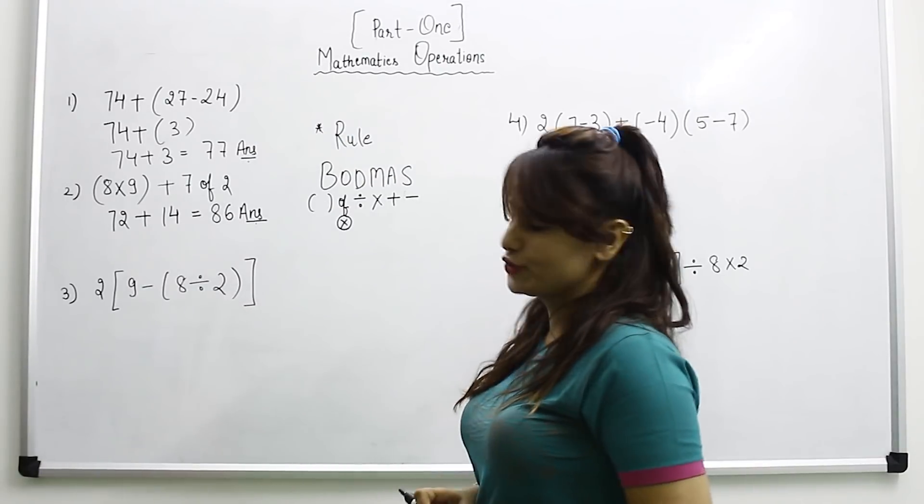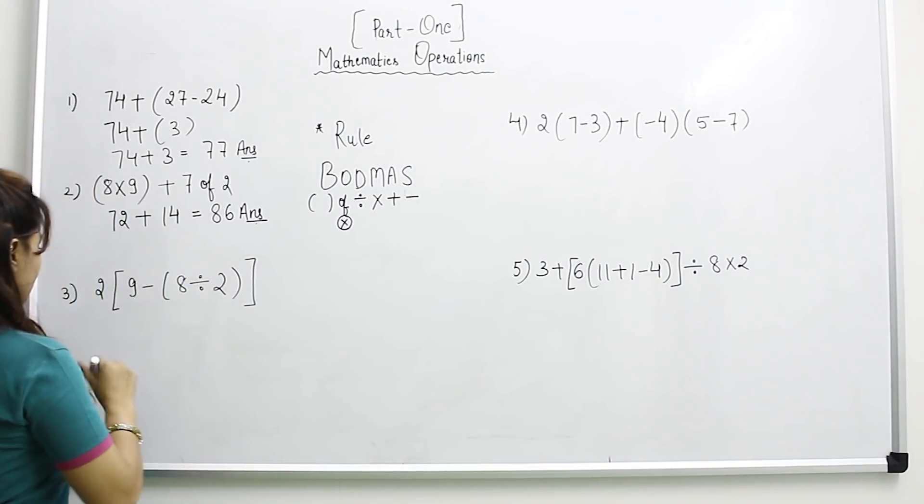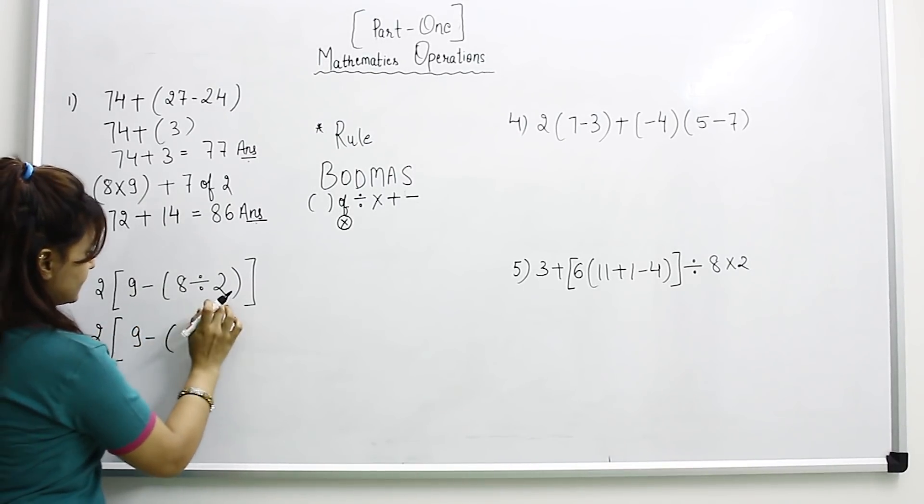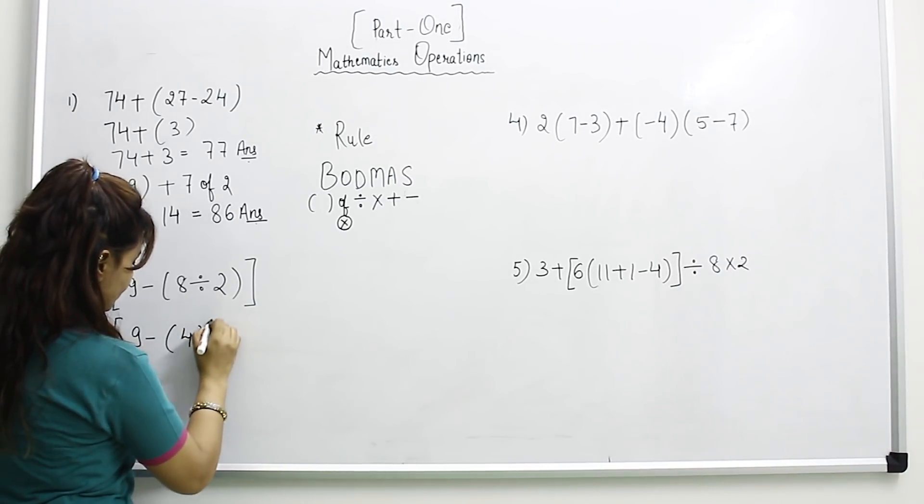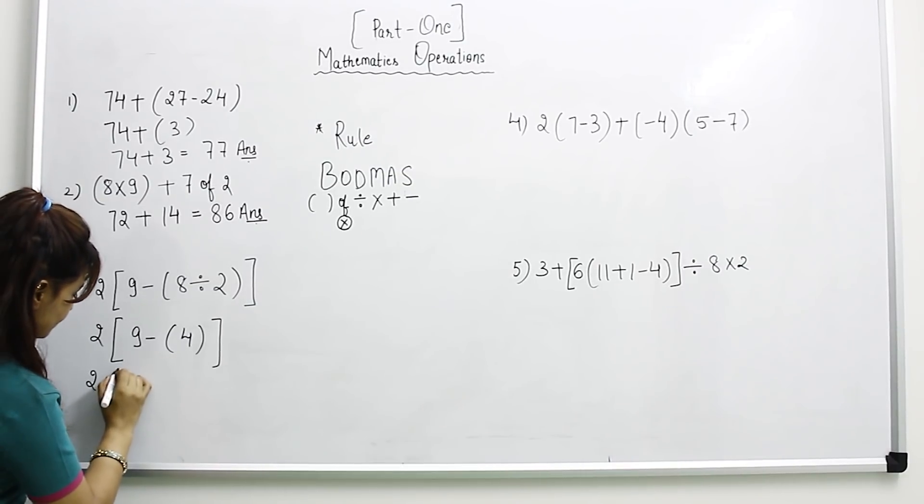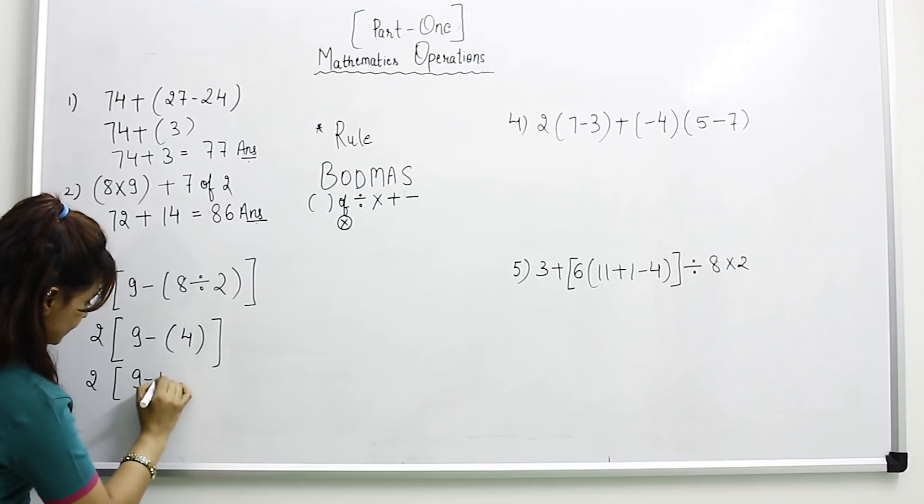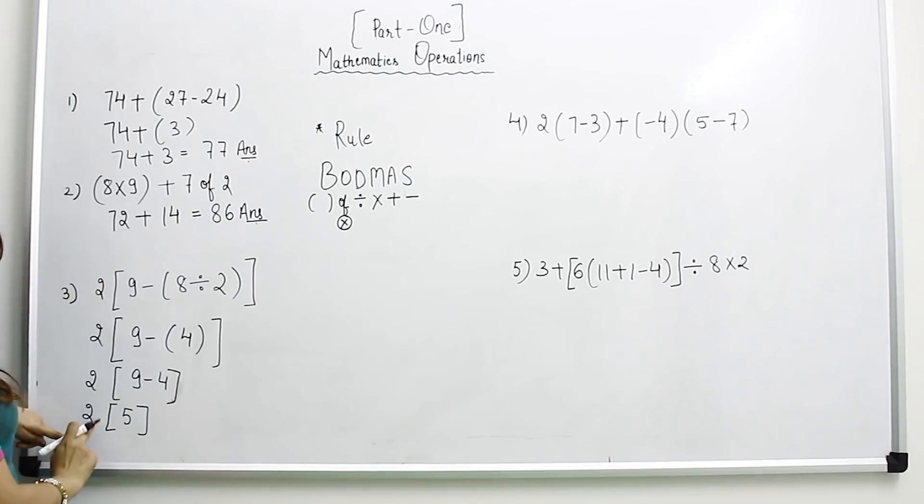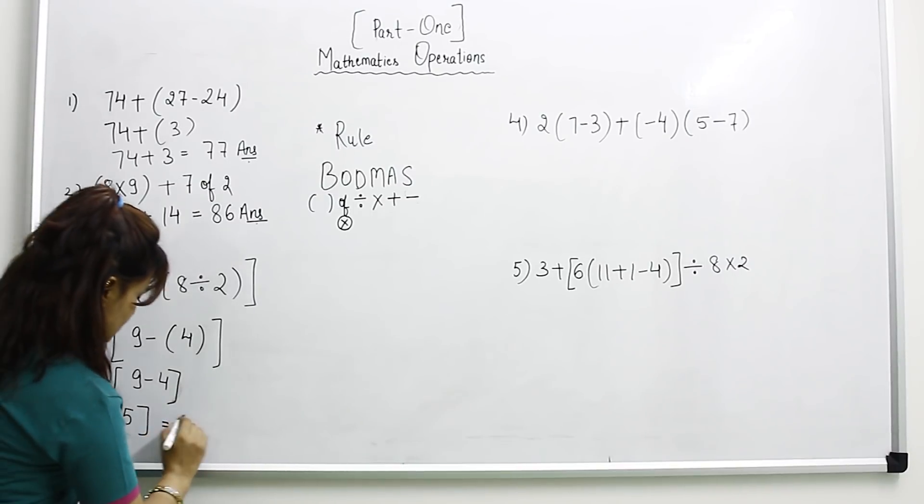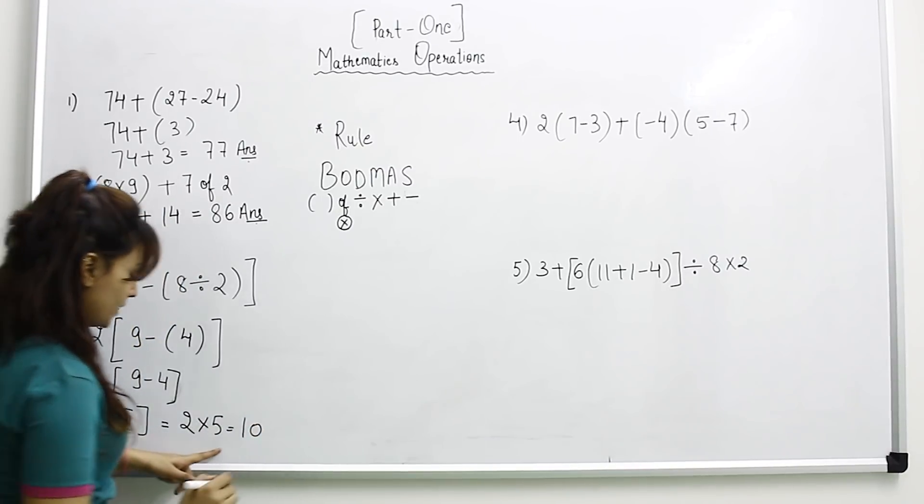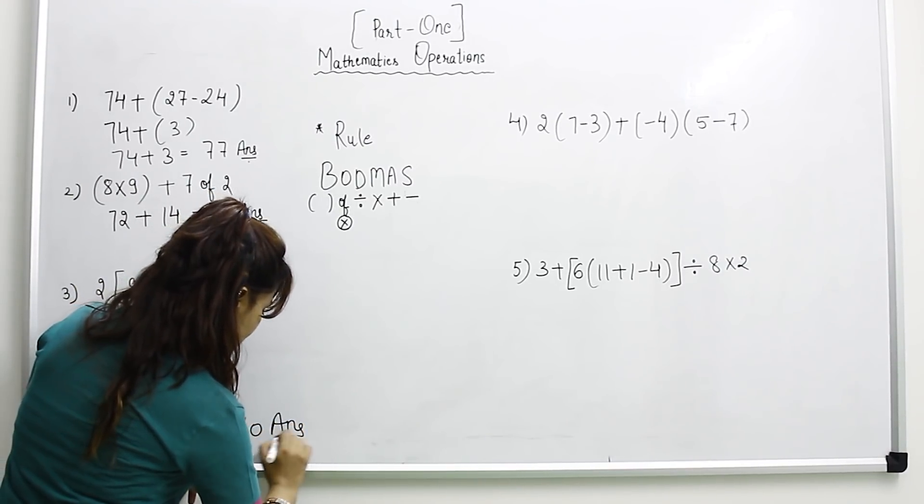Let's come to the third problem. First we have to solve the bracket. 8 divided by 2 equals 4. Now open this bracket: 9 minus 4. Solve this bracket now: 9 minus 4 equals 5. And when there is no sign between two numbers, it means multiplication. So we get 10 as an answer.